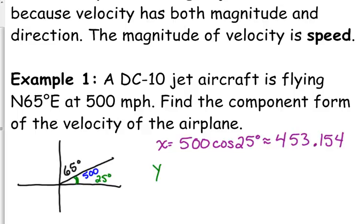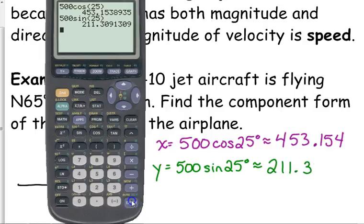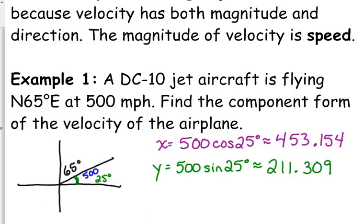The y, or the vertical component, is 500 sine of 25 degrees, which is approximately 211.309. It makes sense that the horizontal component is greater than the vertical component because of this angle.